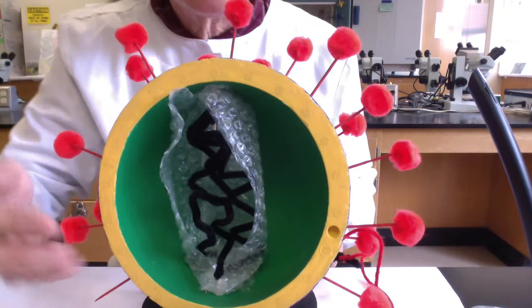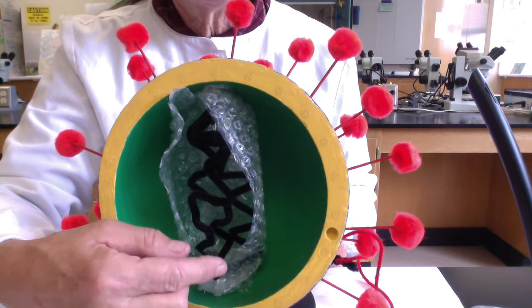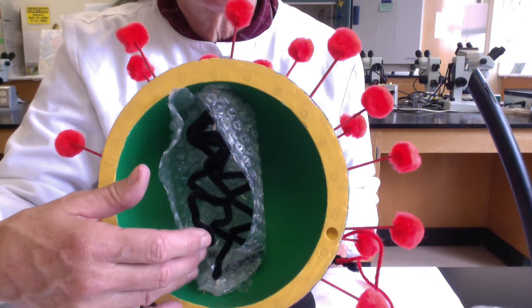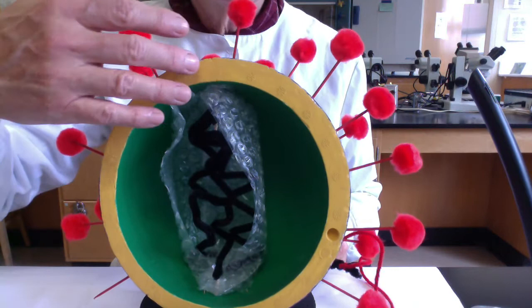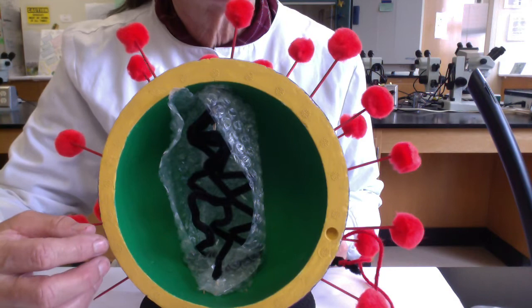So in this model, folks, just to explain it, the black represents the viral nucleic acid, either DNA or RNA. And here they've used this thin sheet to represent the capsid, the protein that would cover the nucleic acid. And then folks, this outermost layer, this is the viral envelope and it's stolen host cell membrane.